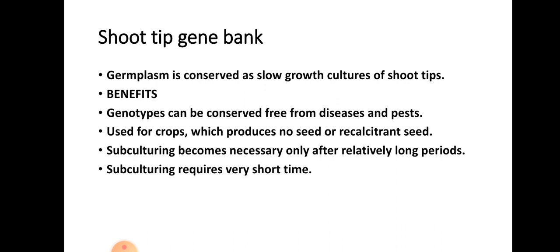In shoot tip gene banks, germplasm accessions are conserved as slow-growth cultures of shoot tips, similar to micropropagation. Benefits include: genotypes can be conserved free from diseases and insect pests; they can be used for crop species that do not produce seed or produce recalcitrant seeds. Subculturing is required only after a relatively long period of about 6 to 36 months, and the subculturing time itself is also very short.